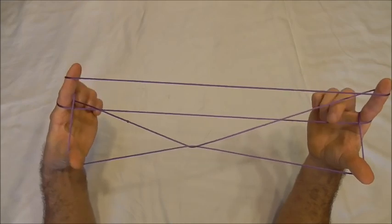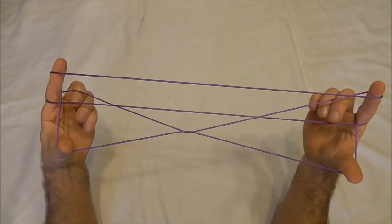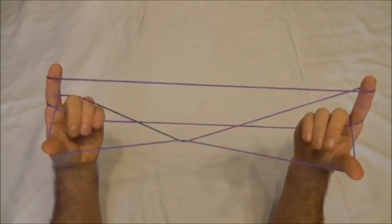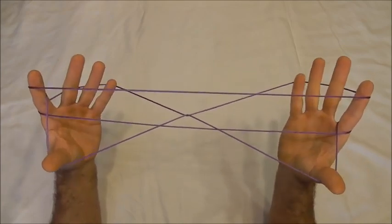Then we should notice there's these two triangles here at the lower part of our pointer fingers. I want to insert my ring, middle and little finger into those triangles and push away that far pointer finger string.